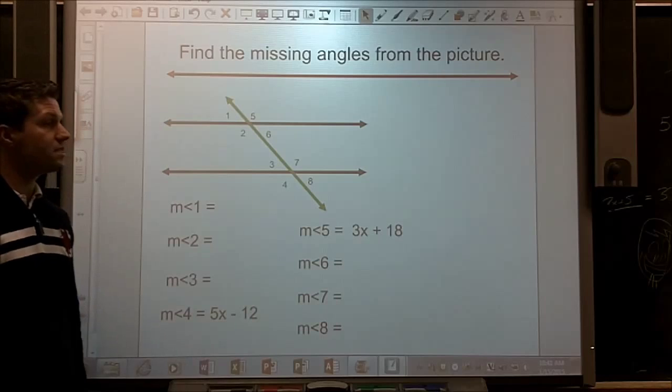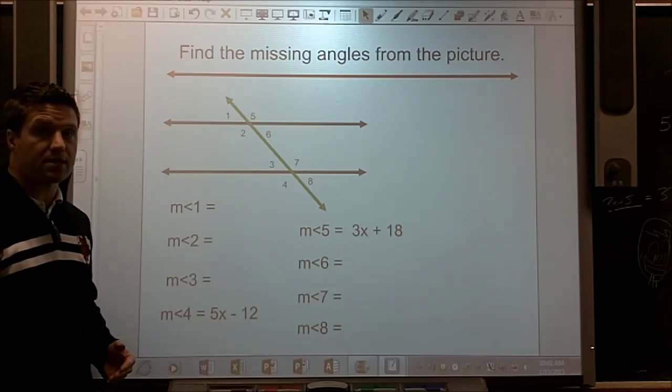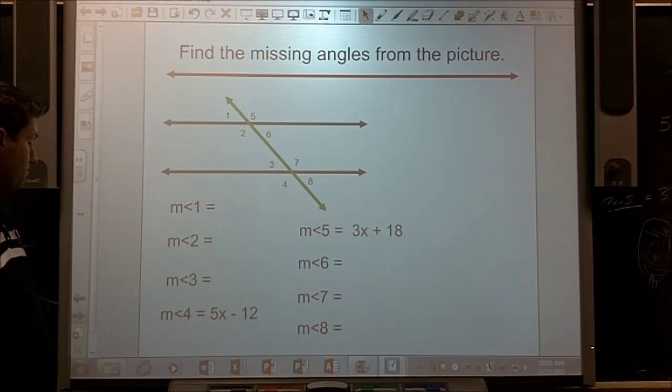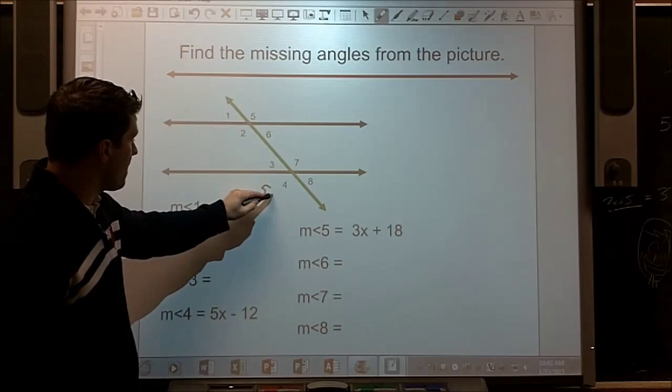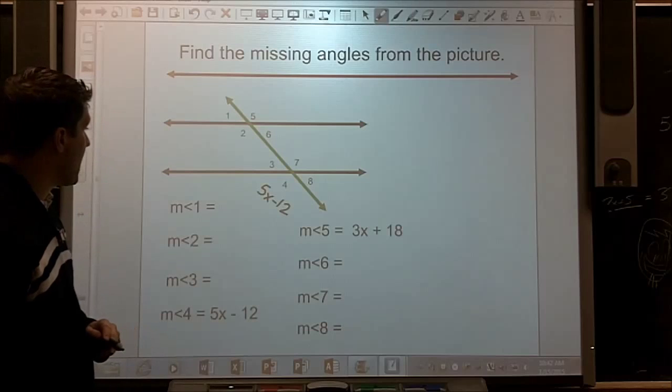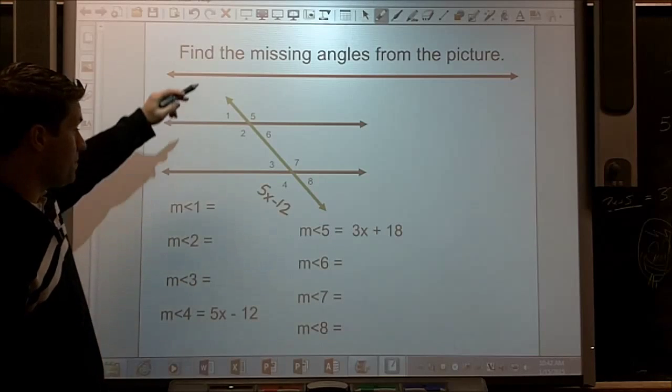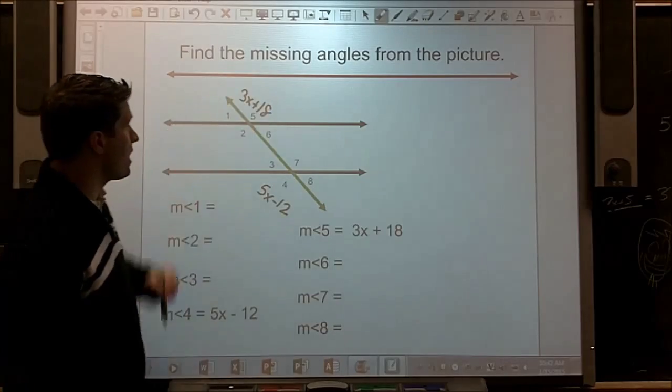All right, so same picture, same angles, in the same place. Let's look at what they gave us. The measure of angle 4 is 5x minus 12. And the measure of angle 5, where is 5? It's up here, is 3x plus 18.